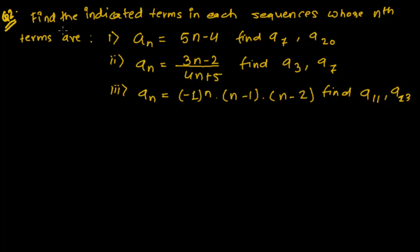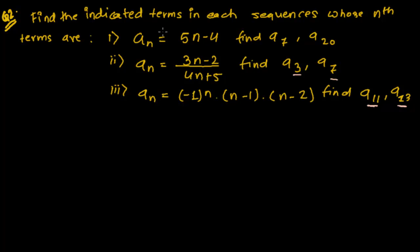But in this question, it is saying something different. Find the indicated terms in each of the sequences whose nth terms are given — for example, an = 5n-4, find a7 and a20, and similar problems. So we have to find out the indicated terms: a11, a13, a3, a7 — the third term, seventh term, and so on of these sequences.